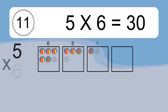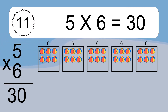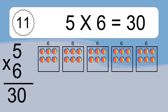5 times 6 equals what? Five times six equals thirty. We have five boxes and each box has six colorful balls inside. If you count all the balls in all the boxes together, you will have 5 times 6 balls. This equals 30 balls.